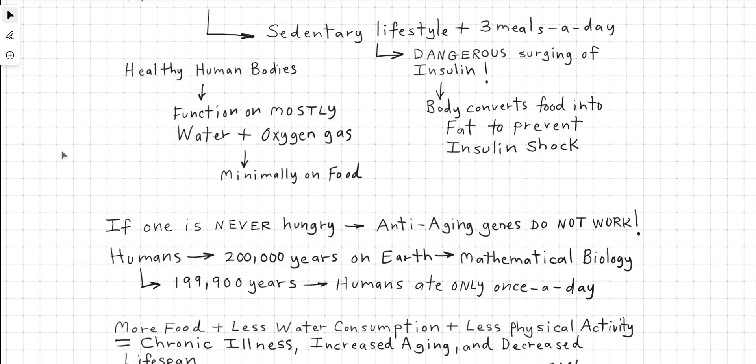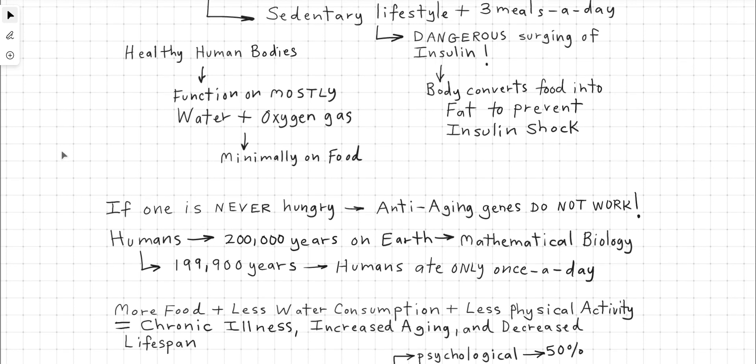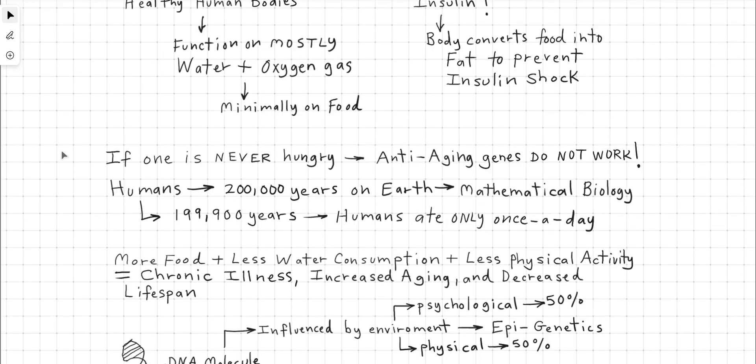It's always a simple answer. Science is a complicated set of analysis to get to a simple answer. And that's what this lecture is providing. Healthy human bodies function on mostly water and oxygen gas minimally on food. The thermodynamic efficiency of the human body cells is extremely high and one meal could keep somebody alive for as much as three or four days. One to two meals a day is more than enough food, but you need the water to make all of this function properly in the body.